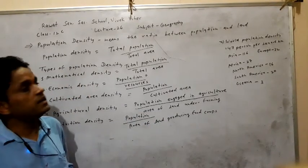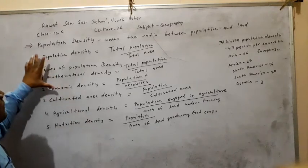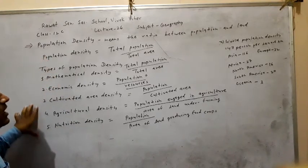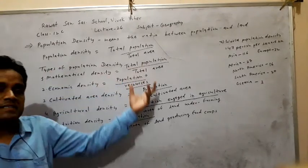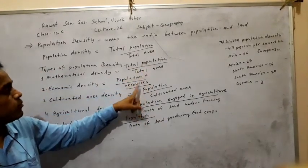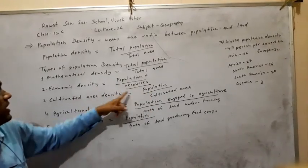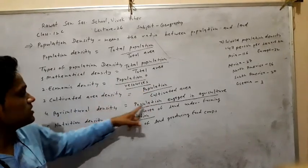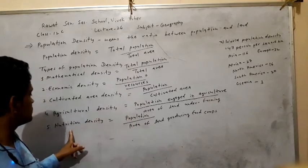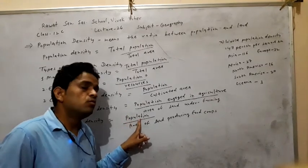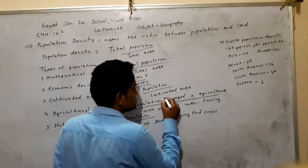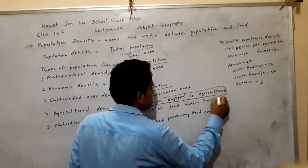So we have studied population density and its types. In types one, two, three, and five — mathematical, economic, cultivated area, and nutrition density — the upper side is total population. In cultivated area density, agricultural density, and nutrition density, population is also used on top. All these different definitions use population on the numerator.